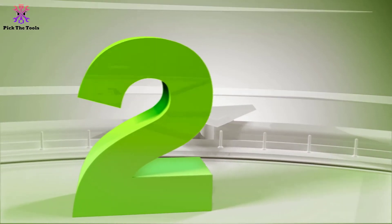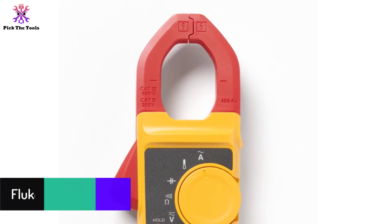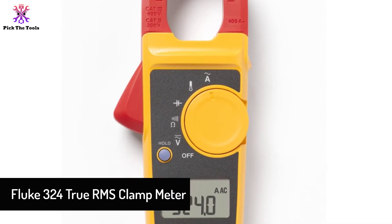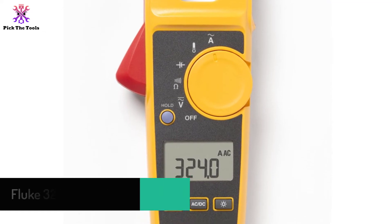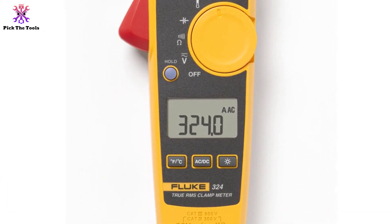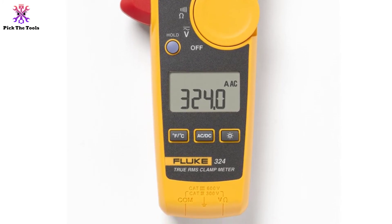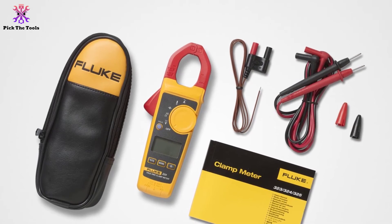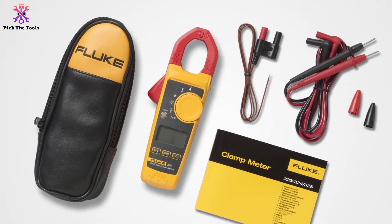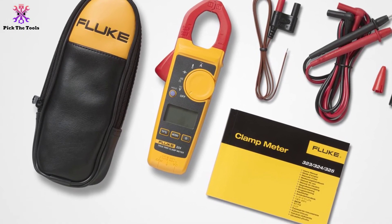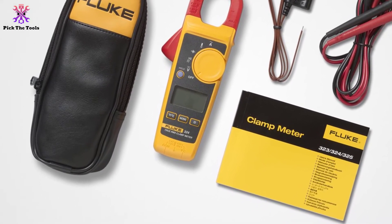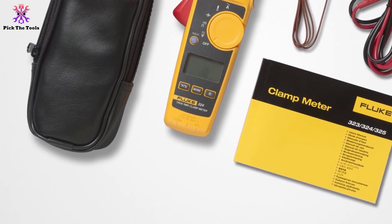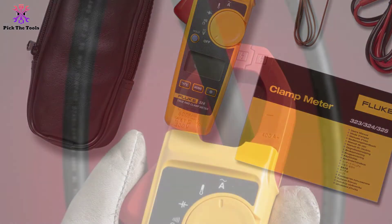At number two, we have the Fluke 324 True RMS clamp meter. Fluke 324 is another model from Fluke on our list. Once you have attached this tool on the electrical appliance, you will get to use various functions. But Fluke 324 has the same AC and DC measurement capacity as the 323. Fluke 324 is an excellent clamp meter in the market for professionals. It's built to be a great correction tool for household electrical benefits of managing the presence of AC voltage load on the circuit switch and fuse.